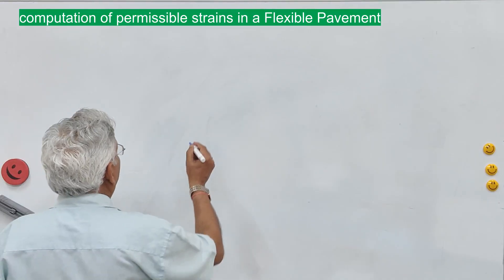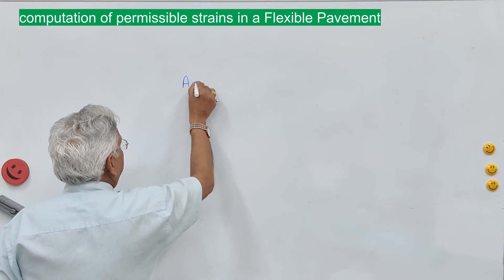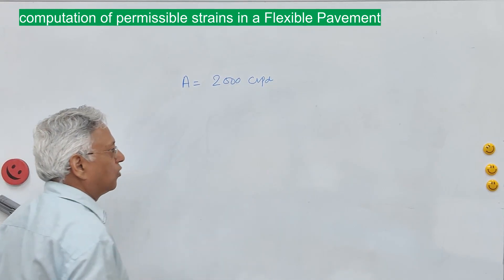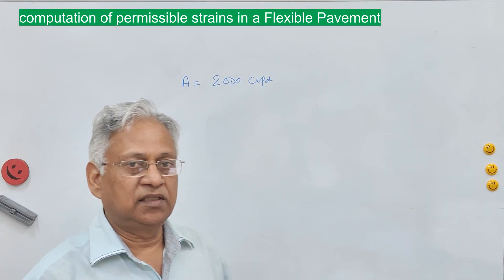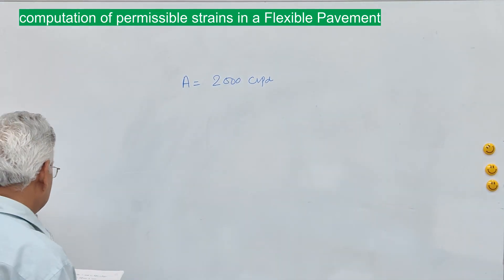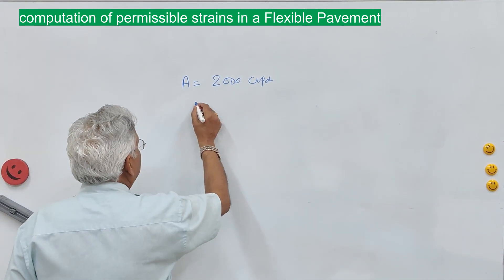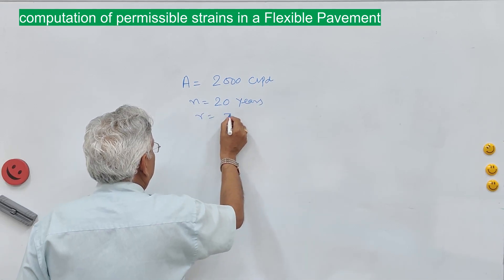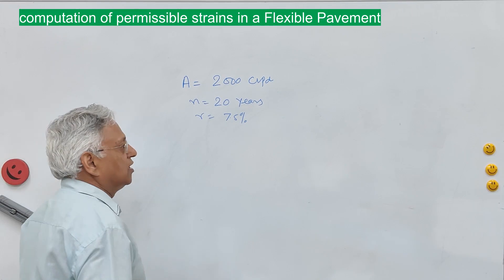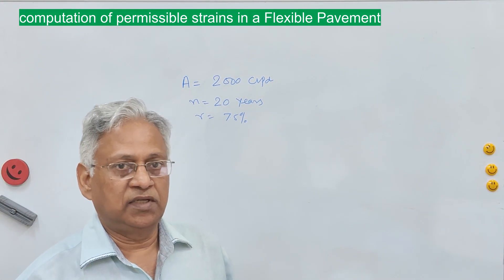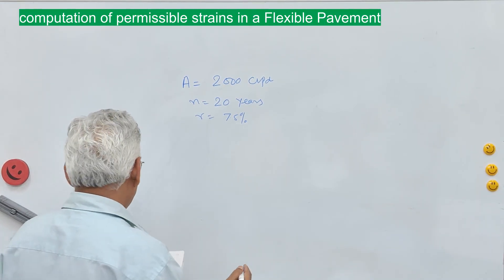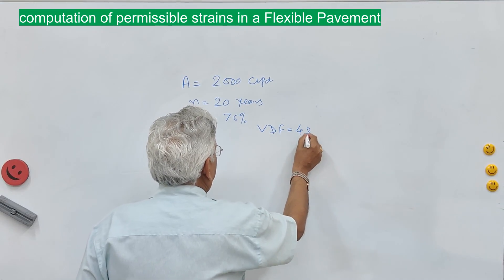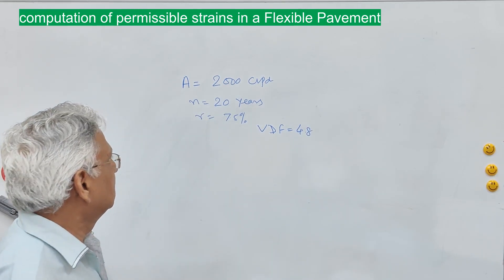The commercial vehicles or initial traffic in one direction is 2000 commercial vehicles per day. Design period is 20 years and growth rate is 7.5 percent. VDF is generally calculated using Excel from load survey data, and for this example we assume VDF is 4.8.